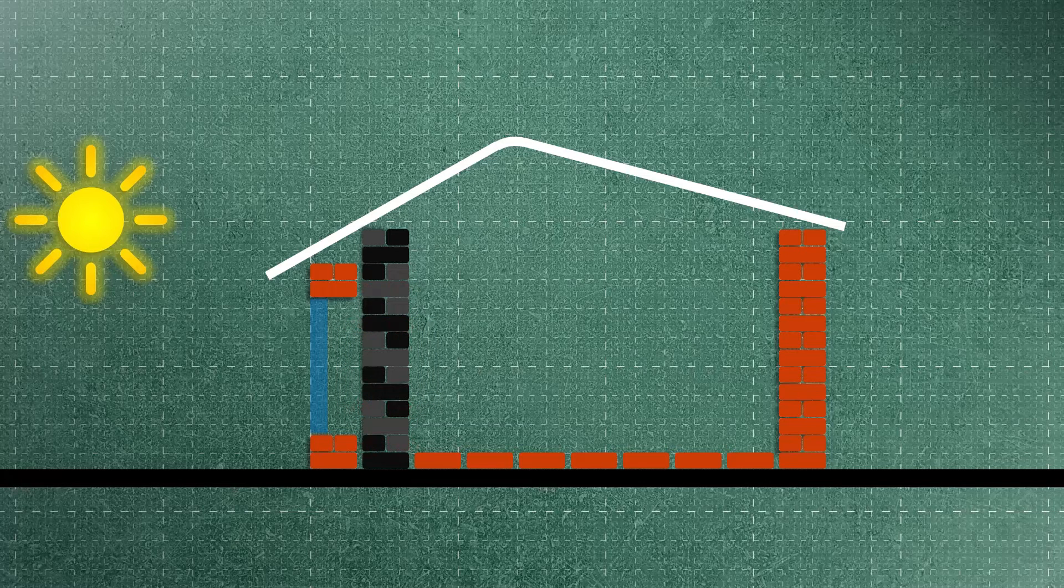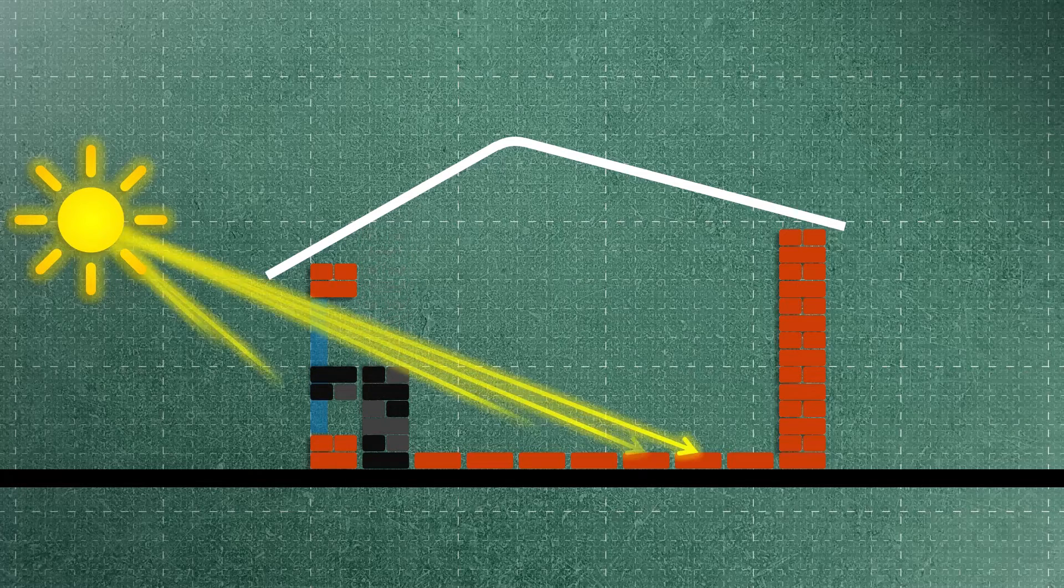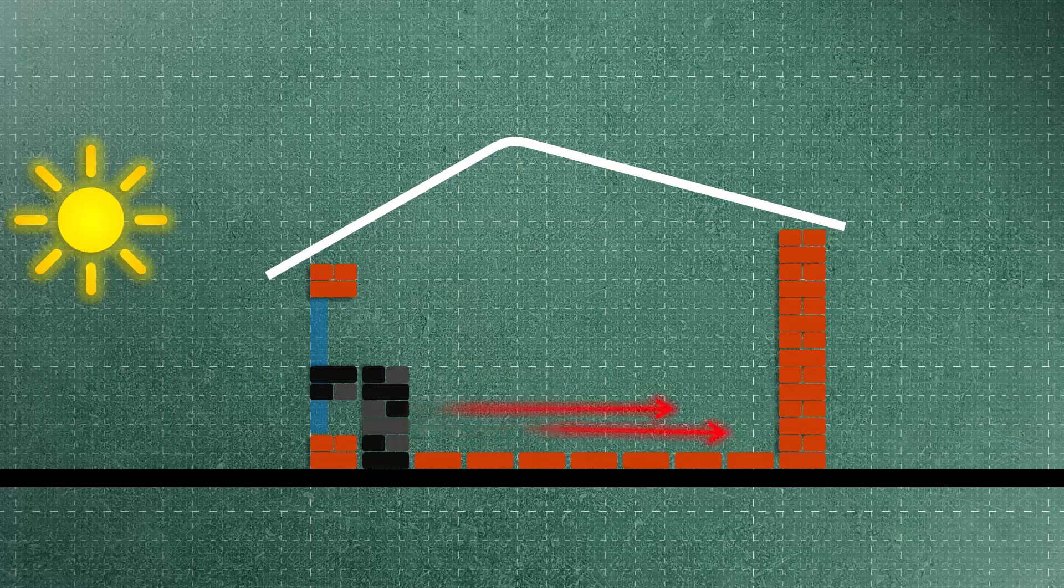Designing a Trombe wall as a half wall is a new approach in designing Trombe walls. The upper part receives heat directly during the day, while the Trombe wall stores heat for use at night.